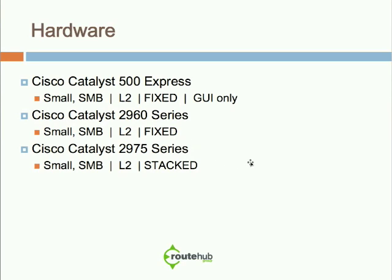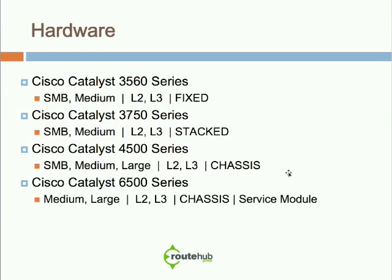The Cisco Catalyst 2975 series is a newer addition to the Cisco collection, recommended for small and SMB environments. It provides Layer 2 but is a stacked technology, so multiple 2975 switches can be stacked together and treated as one logical switch. For LAN access, this is definitely recommended to avoid daisy-chained networks, which are not recommended.